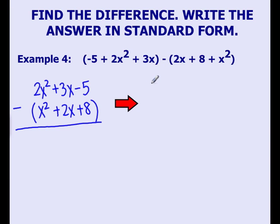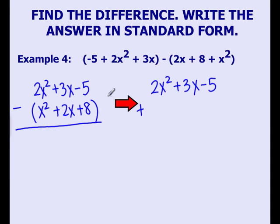Therefore, changing it to 2x squared plus 3x minus 5 — remember to add the opposite. So change the subtraction to addition. The opposite of x squared is negative x squared; it's similar to distributing that negative sign. The opposite of positive 2x is negative 2x. The opposite of positive 8 is negative 8.